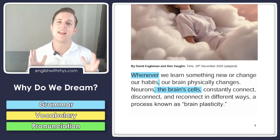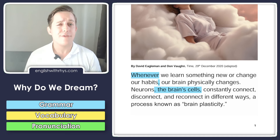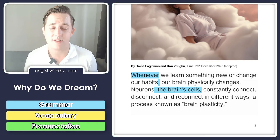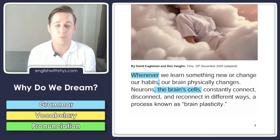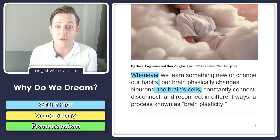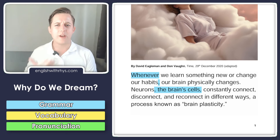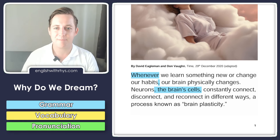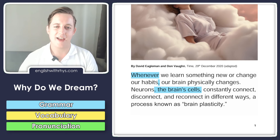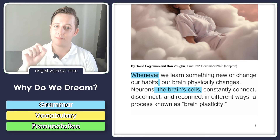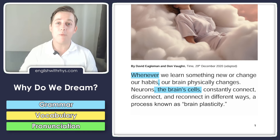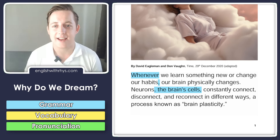Why did we put it in there? Well, not everybody knows what neurons are — it's a scientific word that the normal person has probably never heard. So we need to explain it, give the meaning. The easiest way is with a comma, the meaning, and another comma. For example: Reese, an English teacher, is making a really cool video right now.